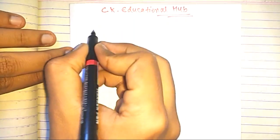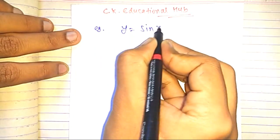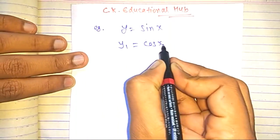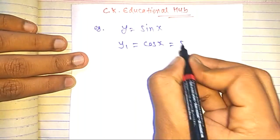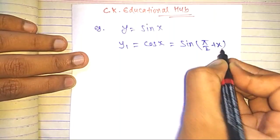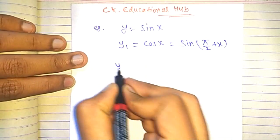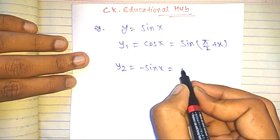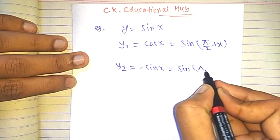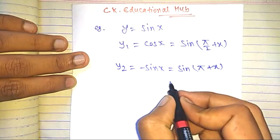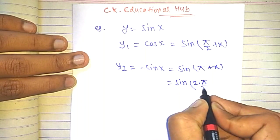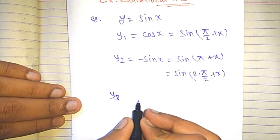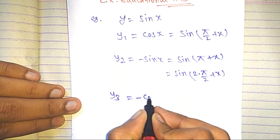The second example is y equals sin(x). Differentiating it the first time: the derivative of sin(x) is cos(x), which we can write as sin(π/2 + x). Differentiating again: the derivative of cos(x) is minus sin(x), which can be written as sin(2·π/2 + x), and then sin(3·π/2 + x).